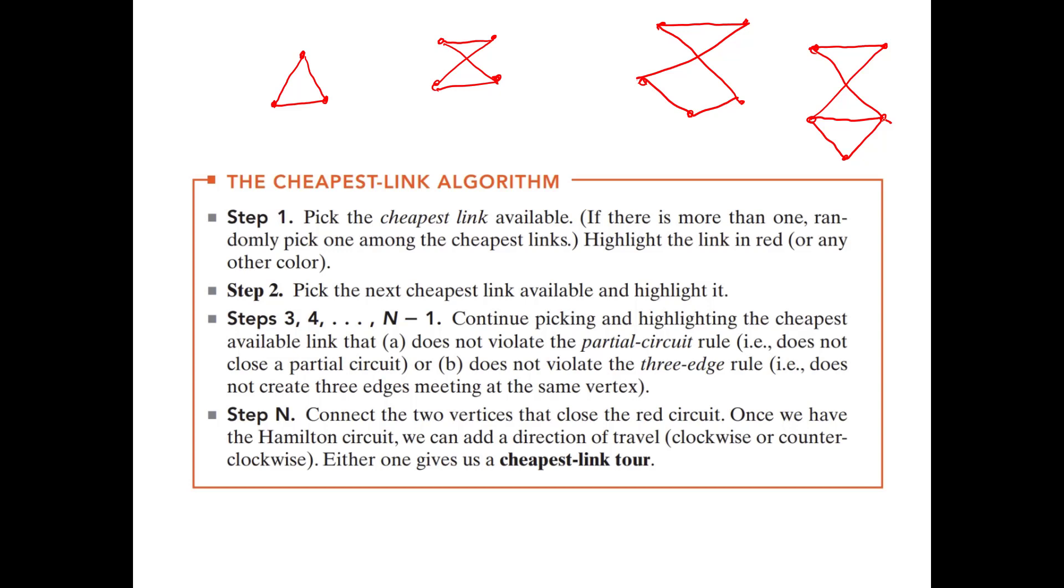Okay, so notice that first thing I told you is that if you have n vertices, you're going to need n edges to make a Hamilton tour. And since you're going to need n edges, if you have n vertices, you're going to have n steps. The first step is relatively simple. It's the cheapest link algorithm. So you're going to pick the cheapest link available. If there is more than one, randomly pick one among the cheapest links. Highlight the link in red or any other color.